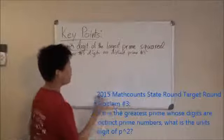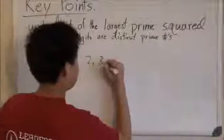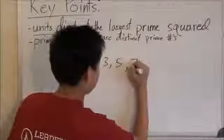And since the only one-digit prime numbers there are are 2, 3, 5, and 7.